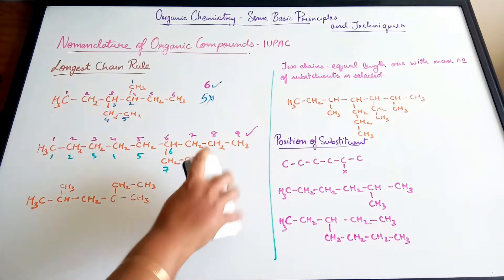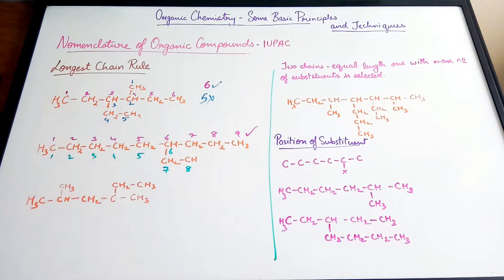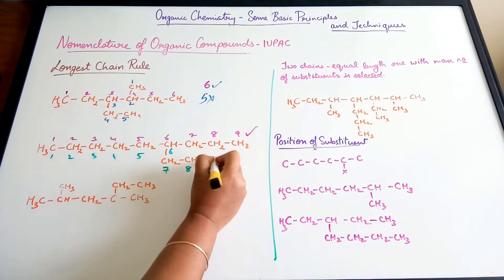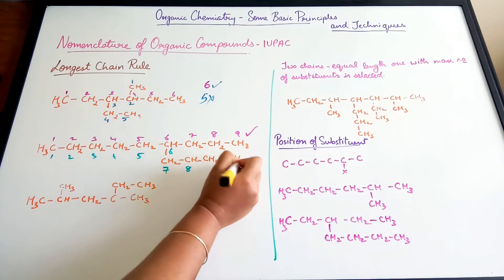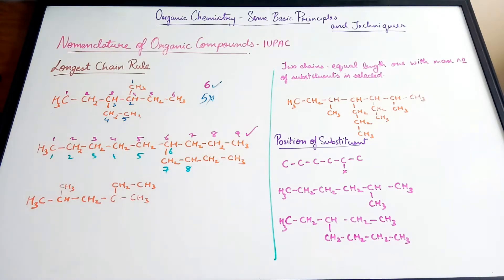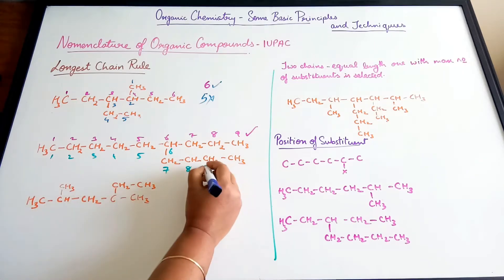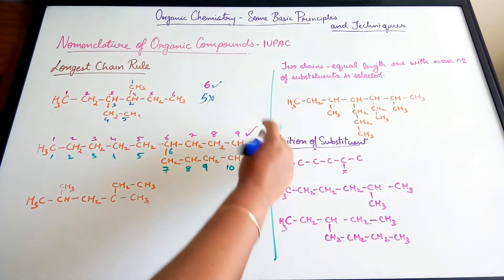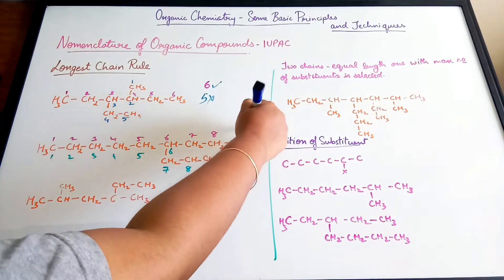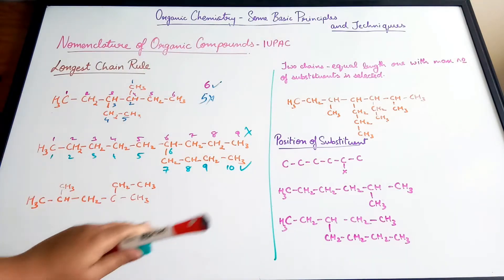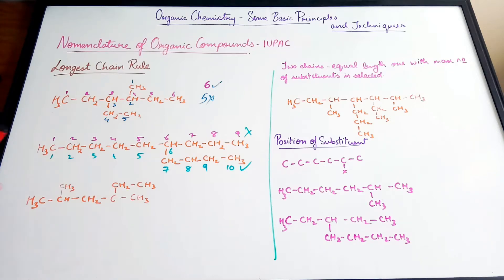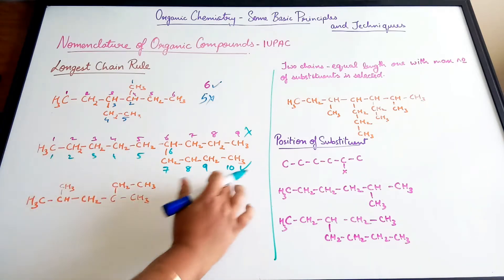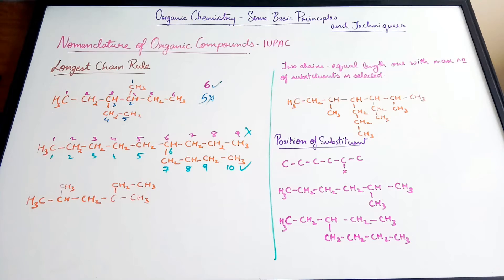Now, let us assume this particular compound, instead of just CH3, had CH2 and another CH3. Then the number of carbon atoms would be 10, and that would have been our main chain — the longest chain for that particular compound.